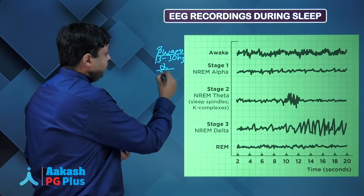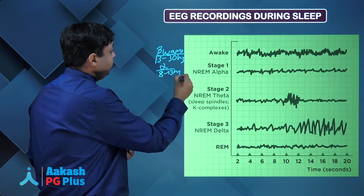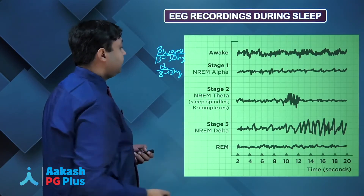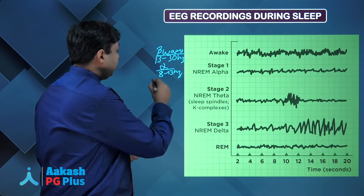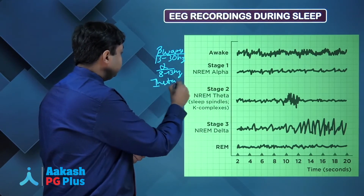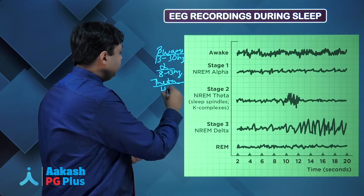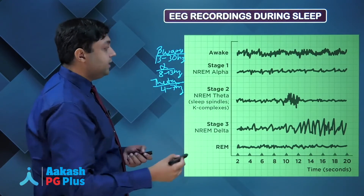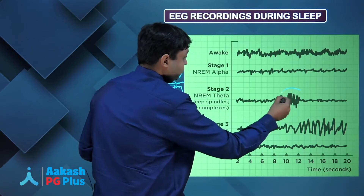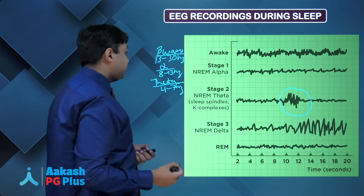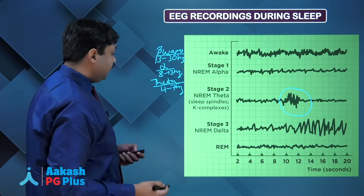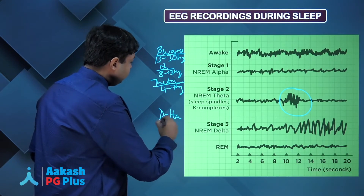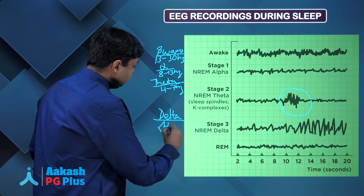Alpha wave patterns are 8 to 13 hertz, low amplitude waves. As they fall asleep further, we go into stage 2 NREM sleep where the pattern changes to theta. Theta waves are even slower, approximately 4 to 7 hertz, and we see the appearance of sleep spindles and K complexes — this typical waveform pattern is called a sleep spindle. In NREM stage 3, we see delta patterns where the frequency is usually less than 4 hertz.